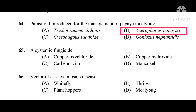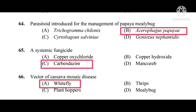Question number 65: A systemic fungicide. The correct answer is Carbendazim. Question number 66: Vector of cassava mosaic disease. The correct answer is whitefly.